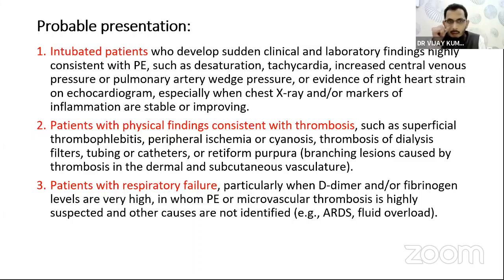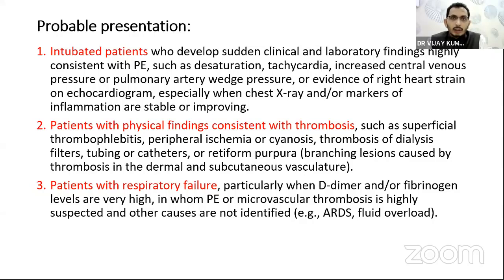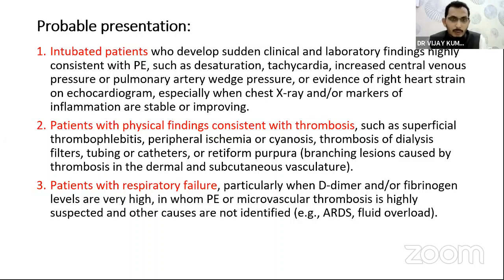What are the probable presentations we see in clinical practice? Among intubated patients, when there is sudden desaturation, tachycardia, increased central venous pressure, increased pulmonary arterial pressure, or evidence of increased right heart strain or new onset RV dysfunction — especially when chest X-ray or inflammatory biomarkers are stable or improving — these are the important patients in critical care units where we must suspect pulmonary embolism.